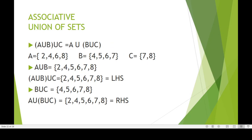For associative union of sets, following the rule A union (B union C) equals (A union B) union C: set A = {2, 4, 6, 8}, set B = {4, 5, 6, 7}, set C = {7, 8}. A union B = {2, 4, 5, 6, 7, 8}. Then (A union B) union C = {2, 4, 5, 6, 7, 8} — this is the left-hand side. B union C = {4, 5, 6, 7, 8}, and A union (B union C) = {2, 4, 5, 6, 7, 8} — the right-hand side. Left-hand side equals right-hand side.